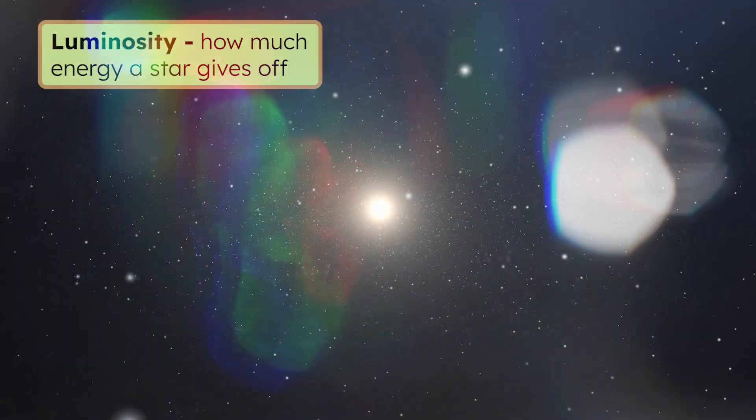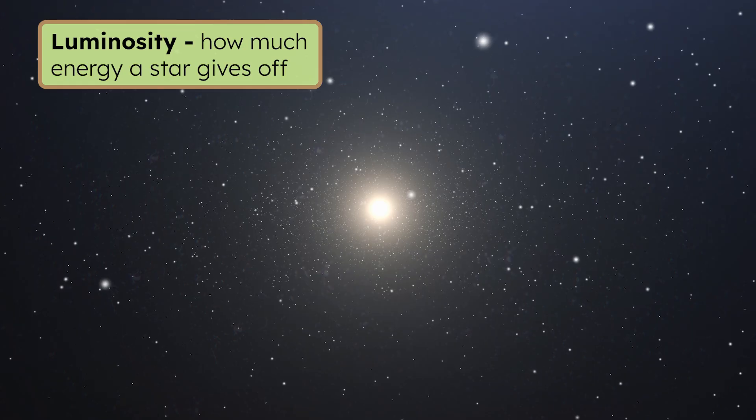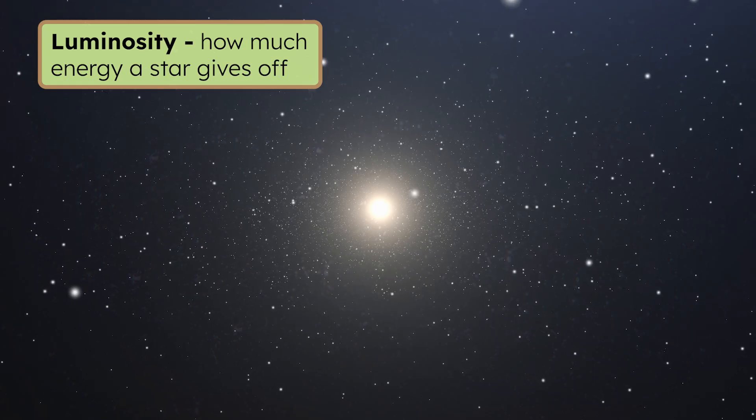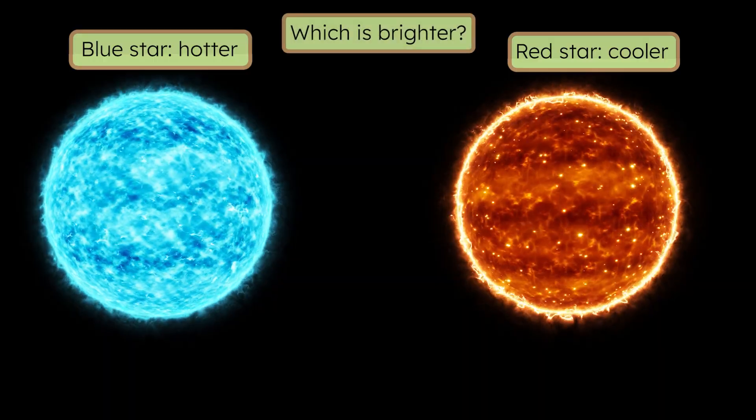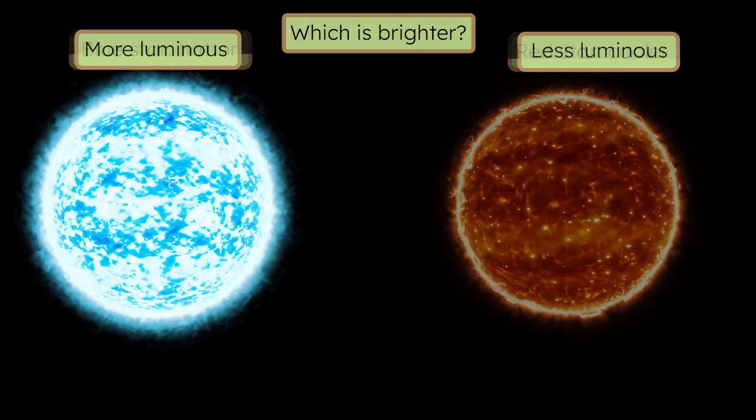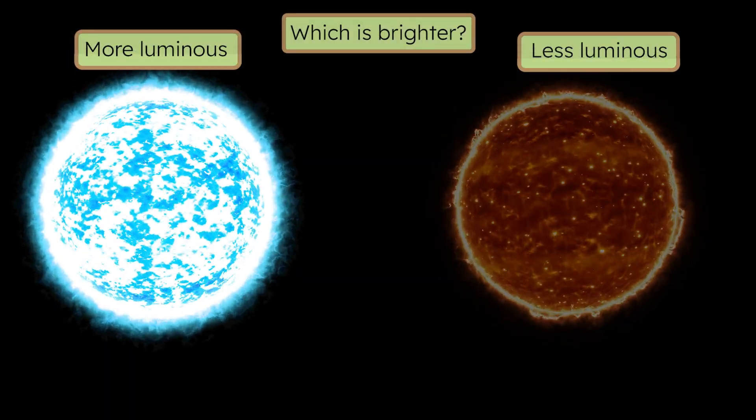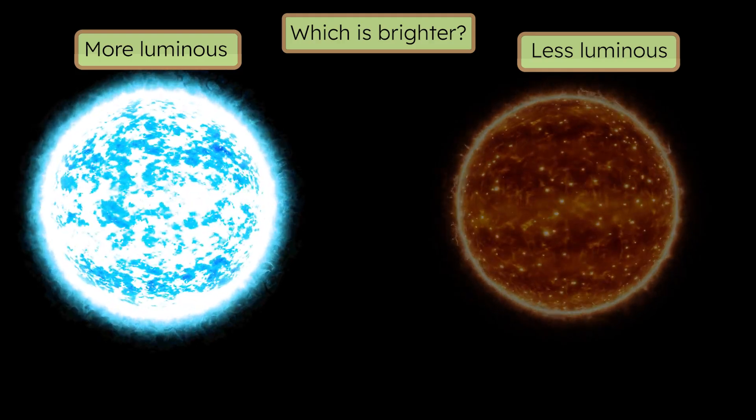So blue stars are MUCH hotter than red stars. But there's more. A star's luminosity, how much energy it gives off, also depends heavily on its temperature. If a blue star is hotter than a red star, which one do you think is brighter? Hotter stars tend to be more luminous, so blue stars give off more total light than red stars.